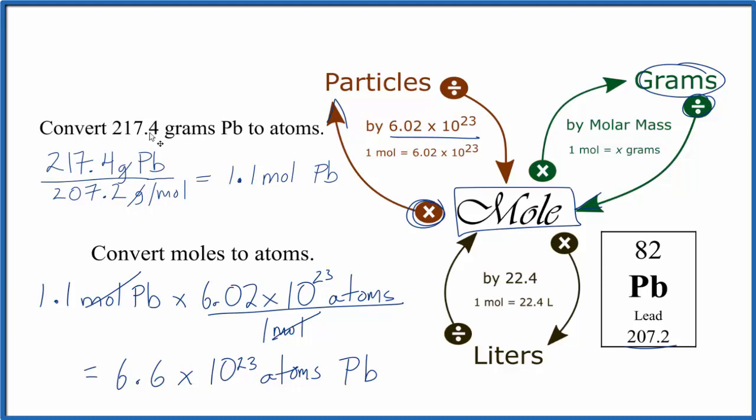And that's in 217.4 grams of lead here. So we've converted from grams of lead to atoms. It's the same process for any of these problems. You take grams, divide by molar mass, get moles, then you multiply by Avogadro's number to get atoms, or molecules, or ions, whatever you're working with.